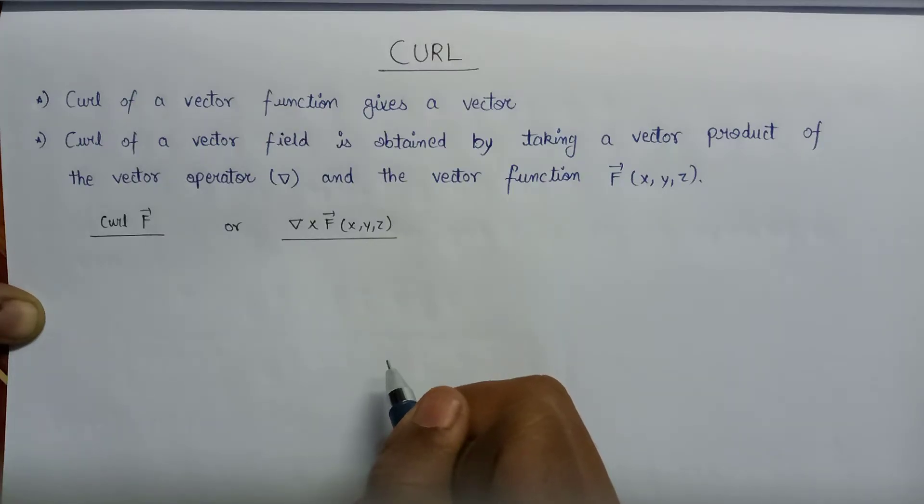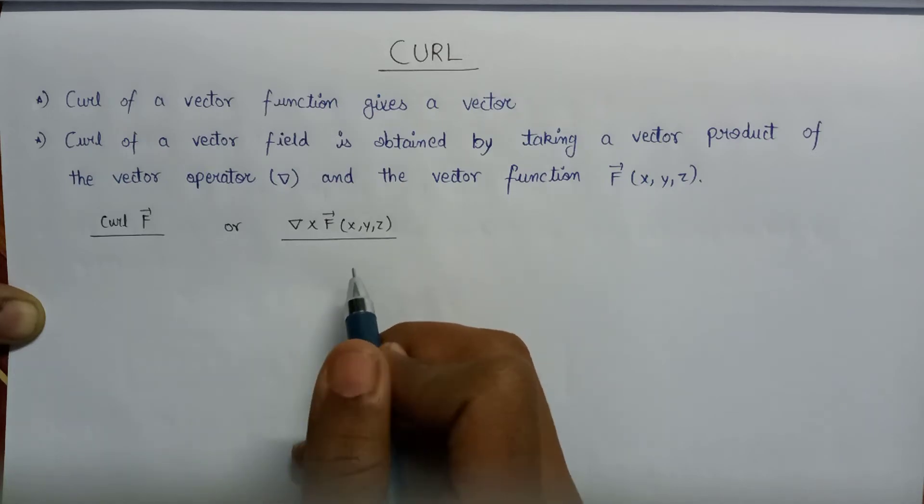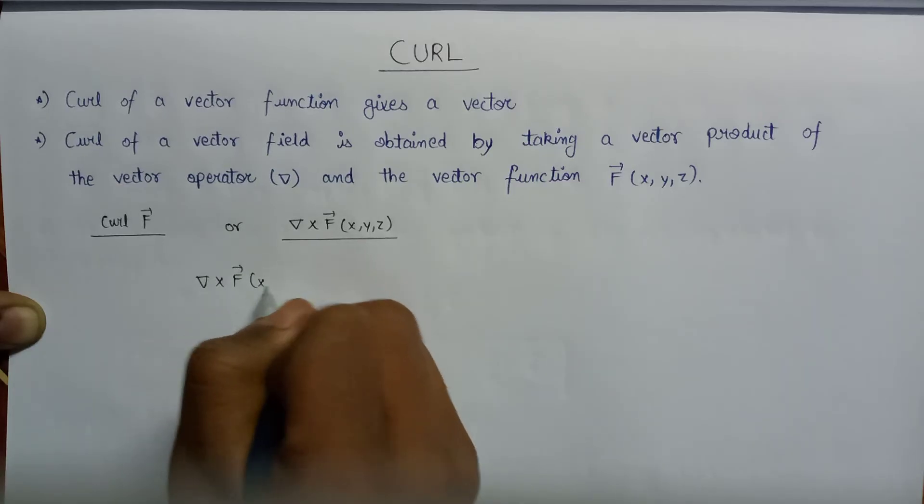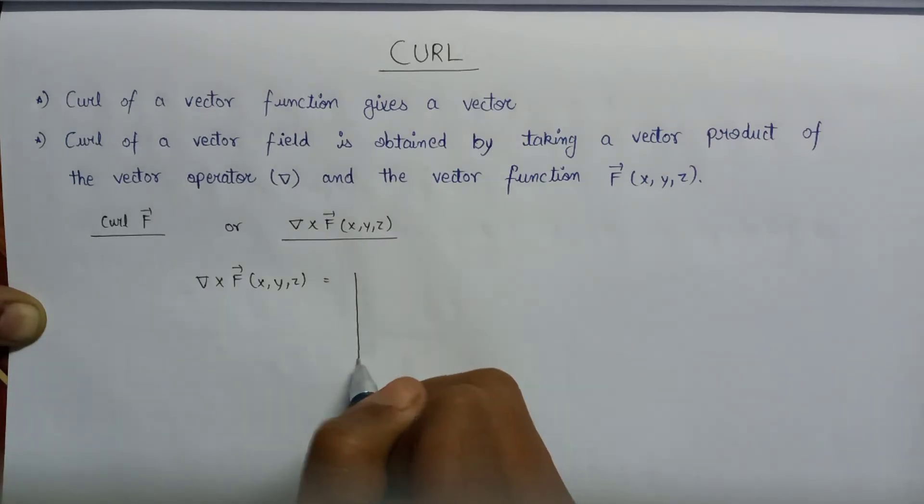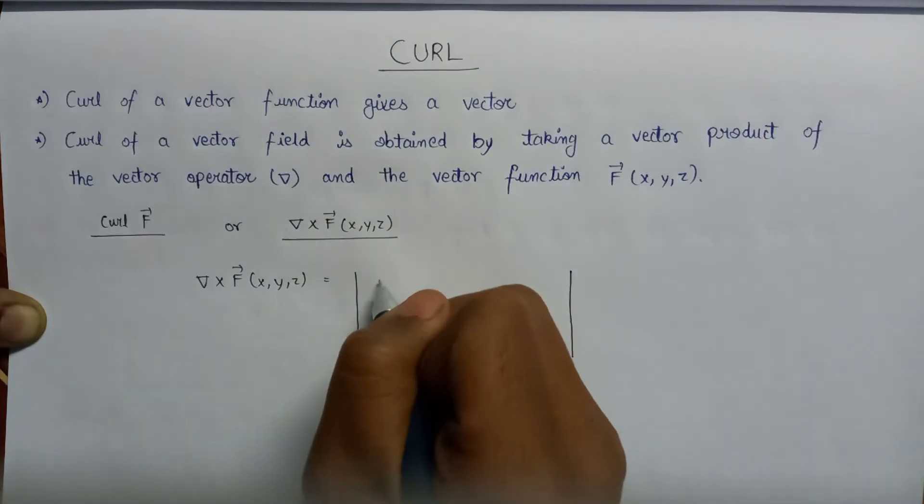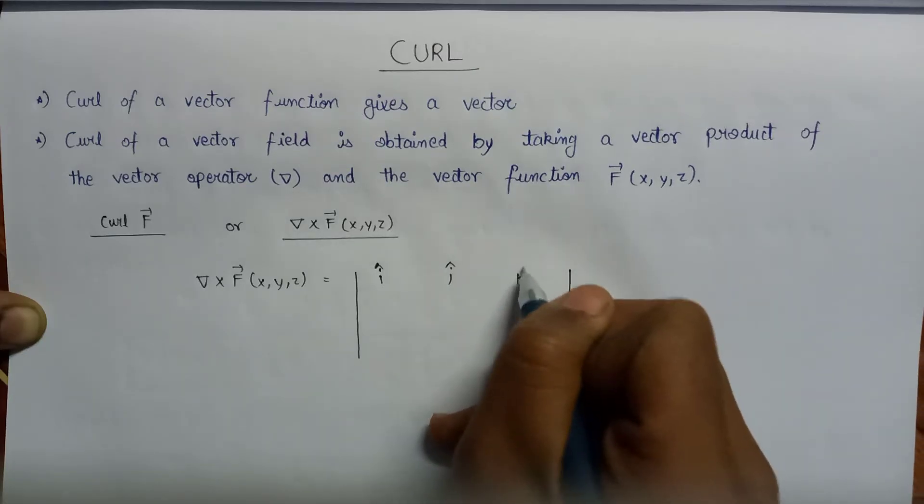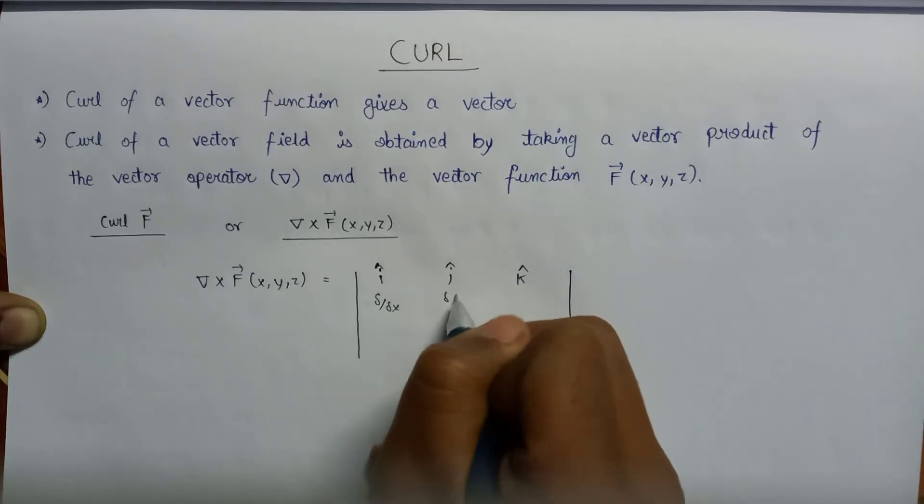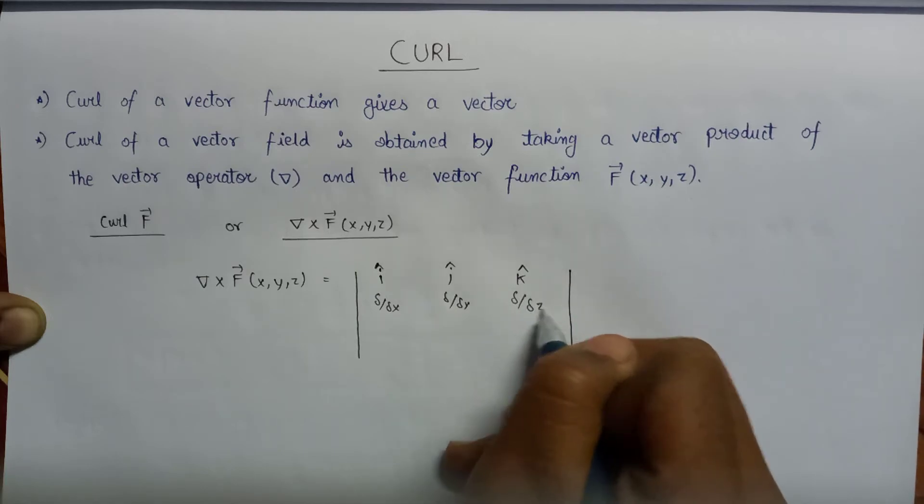Now let us have a look at the representation of this del cross f vector. The del cross f vector of x, y, z is defined by the help of matrix representation. Here is i cap, here is j cap, and this is k cap. This is del over del x, this is del over del y, and this is del over del z.